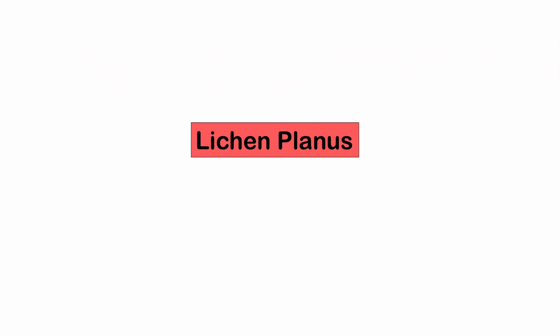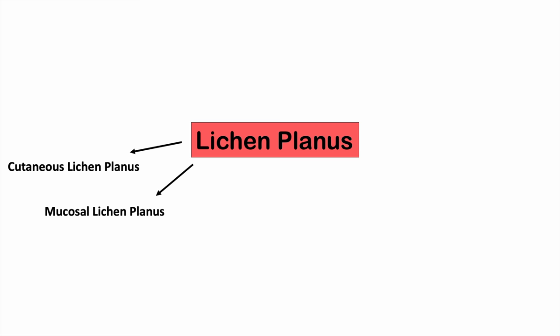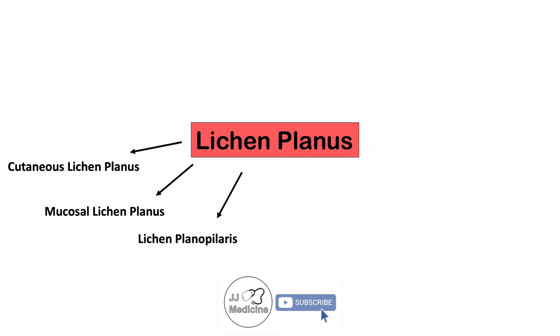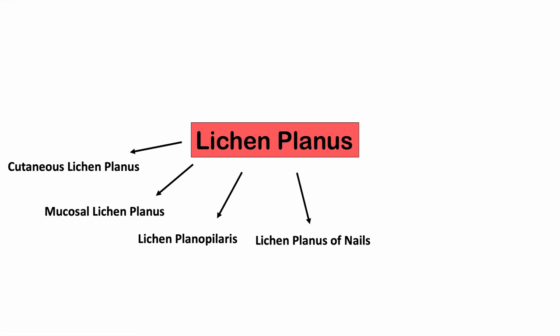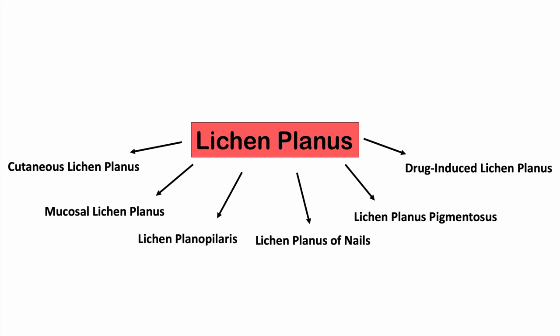There are different forms of lichen planus. Cutaneous lichen planus involves lesions on the skin itself. Mucosal or oral lichen planus affects the oral cavity and other mucous membranes. Lichen planopolaris affects the scalp. Lichen planus of the nails affects the nails. Lichen planus pigmentosis is another form. Drug-induced lichen planus is caused by medication and is often indistinguishable from the other forms.